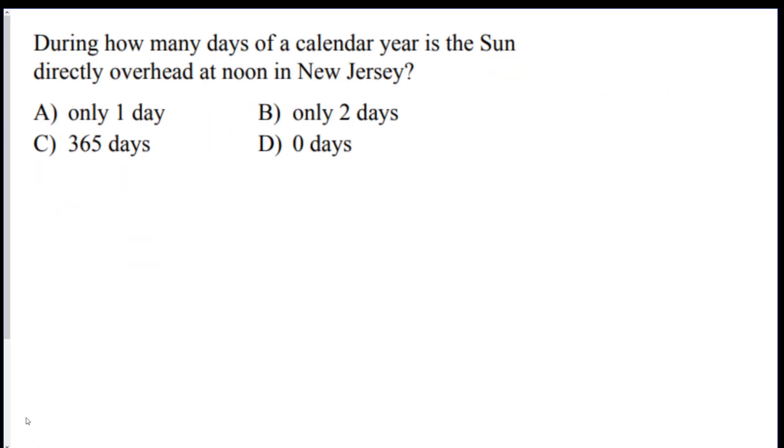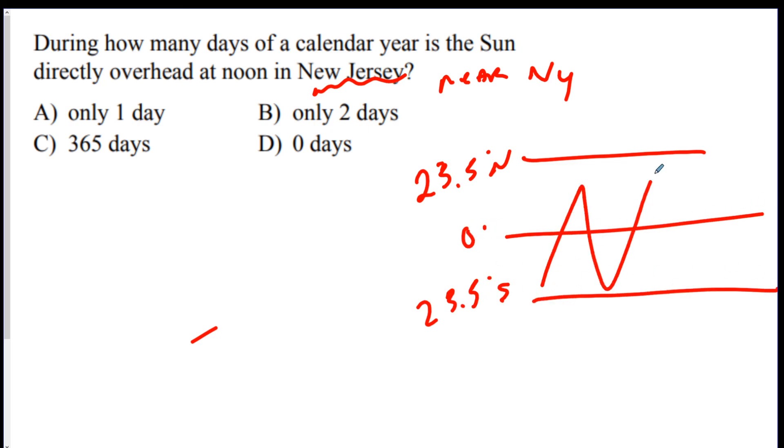We got one last question. During how many days of a calendar year is the sun directly overhead at noon in New Jersey? New Jersey, our next door neighbor. New Jersey is near New York, which means is that between 23.5 degrees north and 23.5 degrees south? And there's the equator. Is it in this area that we talked about? No. New York's all the way up here so this is never going to happen. D is the best.